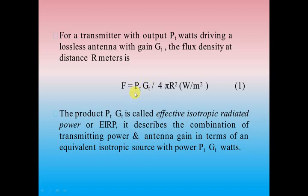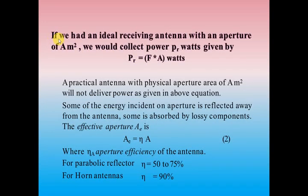If I want to represent EIRP in dBs, I simply add PT and GT - the amount of power transmitted plus the gain of the transmitter antenna - and the combination is considered as effective isotropic radiated power. If we had an ideal receiving antenna with an aperture area of A meter square, we would collect received power PR in watts, which is the multiplication of the flux radiated into the aperture area of the receiver antenna: F times A.